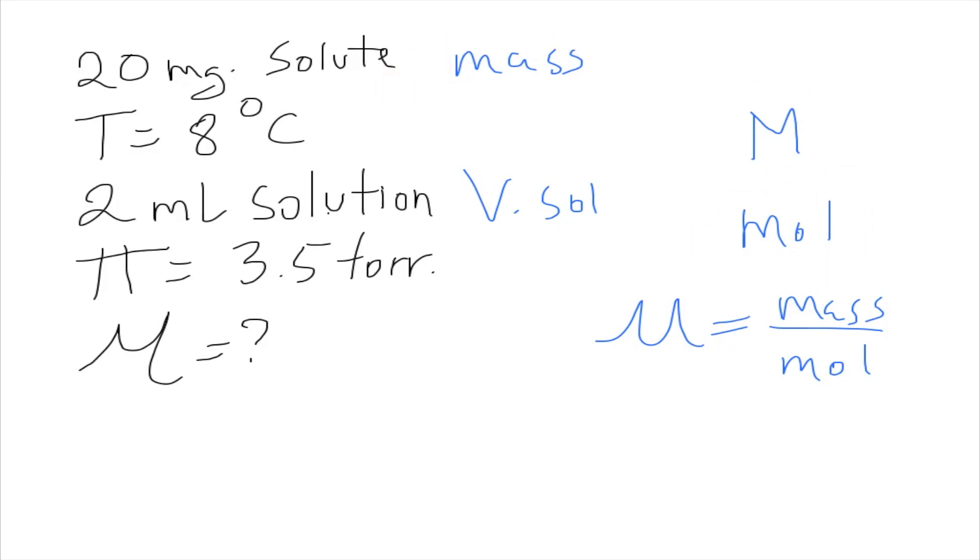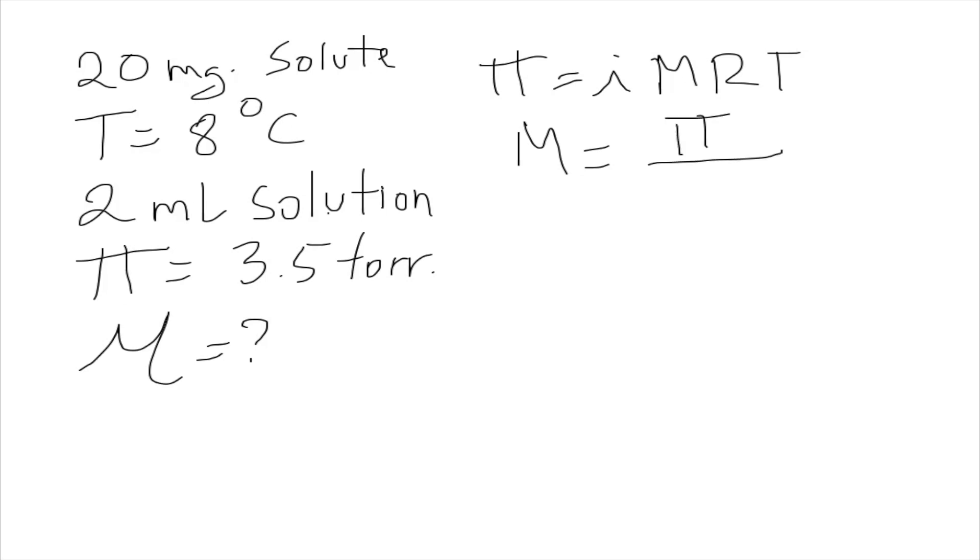The first step is to find the molarity of the solution. Like before, π = IMRT. I is 1 because it's also molecular. And the molarity is equal to π/(RT). R is our constant, so it's going to have the same value as before, 0.0821. And we plug in our values.